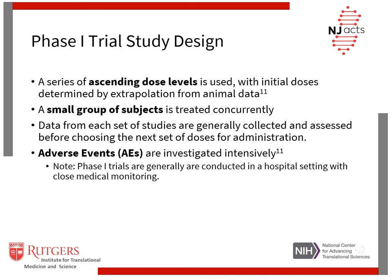As a phase 1 trial continues, researchers answer questions related to how the drug works in the body, the side effects associated with increased dosage, and early information about how effective it is, to determine how to best administer the drug to limit any risks and maximize possible benefits. A series of ascending dose levels is used, with initial doses determined by extrapolation from animal data, beginning with a low dose and proceeding until a dose range suitable for use in later trials is identified. A small group of subjects is treated concurrently and may receive one dose of medication or several doses in a series of consecutive treatment periods. Data from each set of studies are generally collected and assessed before choosing the next set of doses for administration.